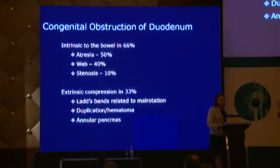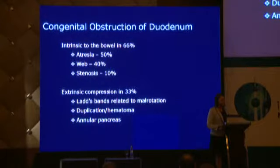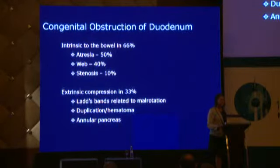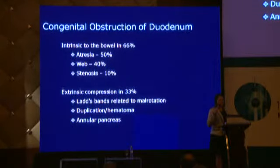Moving on to the duodenum: congenital obstruction intrinsic to the bowel includes atresias, webs, and stenosis. External compression relates to Ladd's bands, duplications, hematomas, and annular pancreas — all of these should be in your differential as you go through your imaging. Think about the anatomy systematically: if it's at the pylorus, what comes next, and proceed from there.